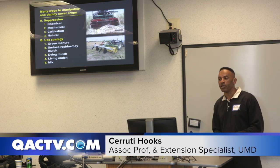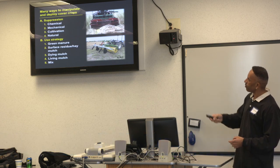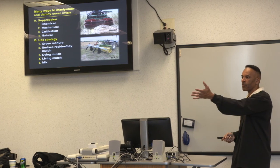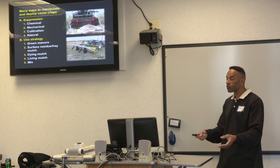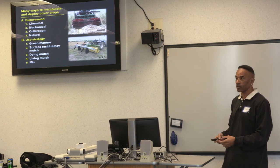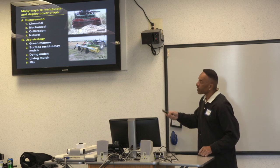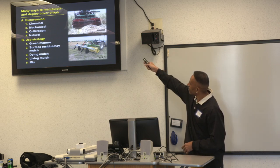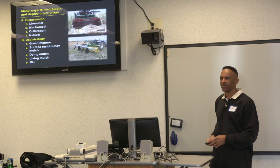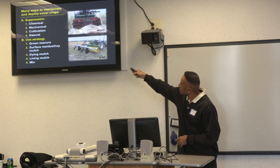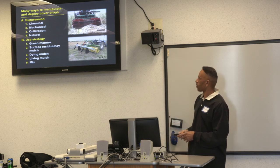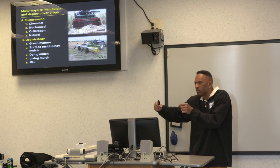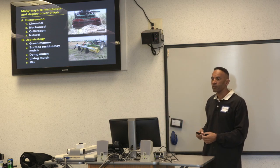There are many ways to deploy and manipulate cover crops — chemical suppression, mechanical suppression, cultivation, or letting them die naturally. Some, like crimson clover, die on their own in late spring. New equipment is constantly being developed: for example, a raised bed roller crimper, and an inline roller crimper from Italy that crimps the cover crop and makes a slit so you can drop seeds or transplants directly in.